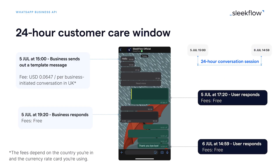Moving forward, let's take a closer look at how a 24-hour customer service window works. For user-initiated conversations, the 24-hour countdown will only start when you reply to the user, not when the user first reaches out to you. For business-initiated conversations, the 24-hour countdown starts when you send out a template message. For example, if you reach out at 3 p.m. on the 5th of July and the customer does not reply by 2:59 p.m. on the 6th of July, the conversation will end there and be counted as one business-initiated conversation.